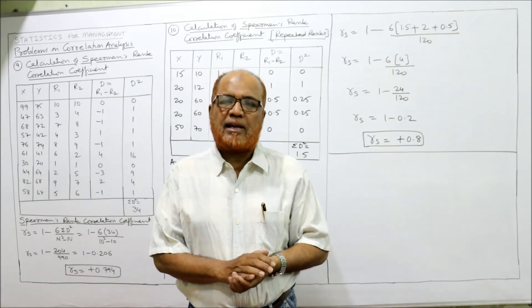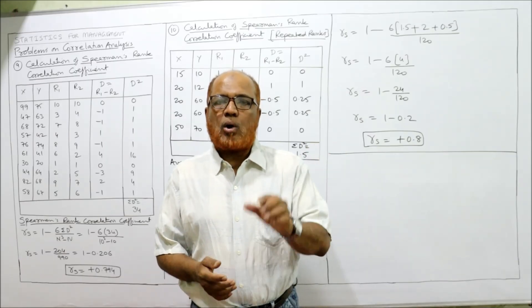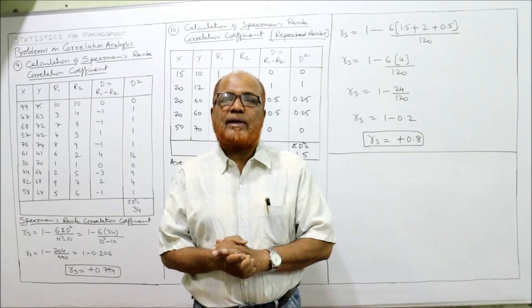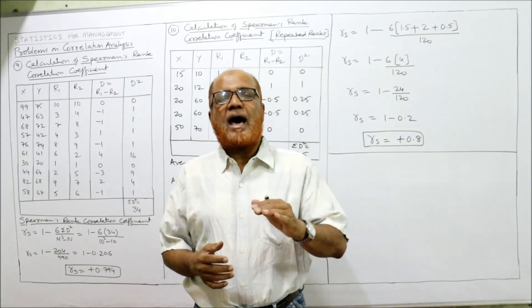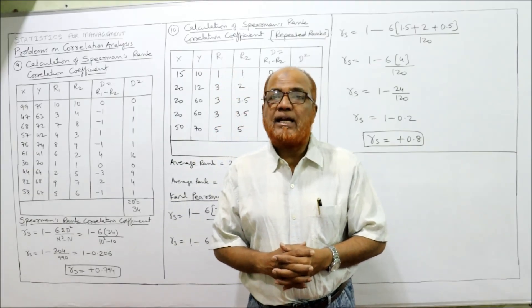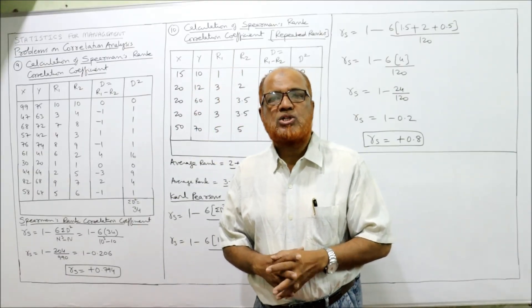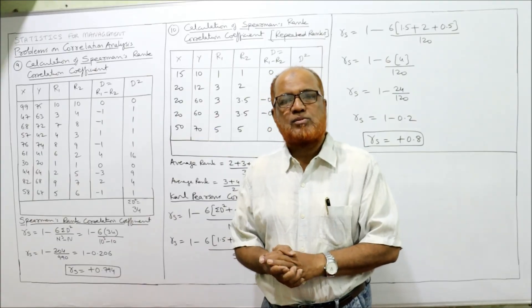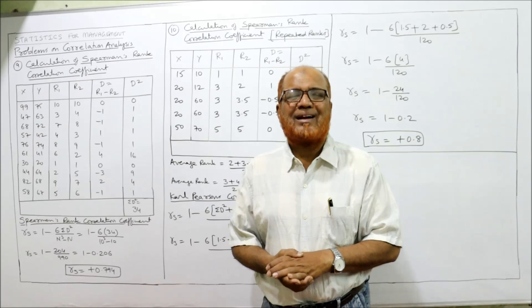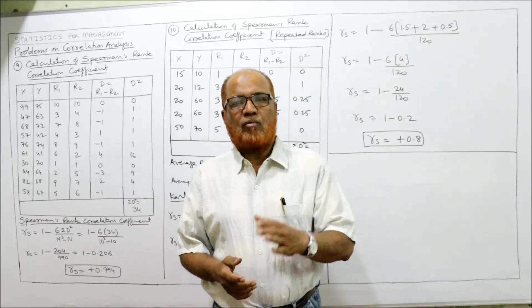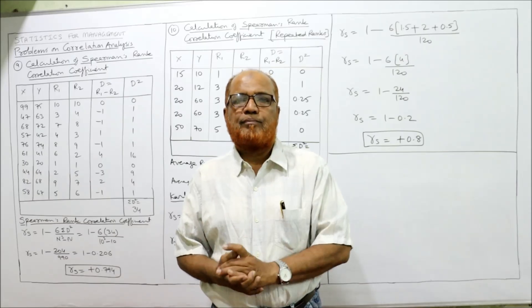In the last video, I explained a problem where ranks were given — first judge, second judge, third judge — so we calculated directly. In this video, the ranks are not given; we have to assign the ranks. Also, when ranks are repeated, the formula should be modified. If you are watching this for the first time, you may get confused — my suggestion is to watch from the first video in sequence.